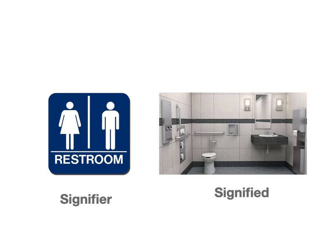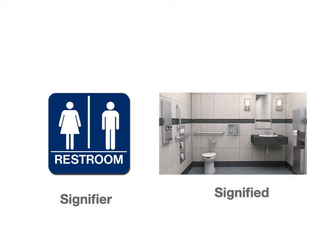All right, how about that? I thought that was really good — short and to the point. So to reiterate: semiotics divides signs — all things that represent meaning — into two categories: the signified and the signifier. The signifier is the symbol. In my example here, the signified is the actual thing. So we're talking about a restroom, and the signifier is the symbol — it can be a symbol, an index, or an icon. In this case it's a symbol.